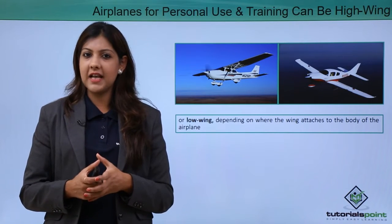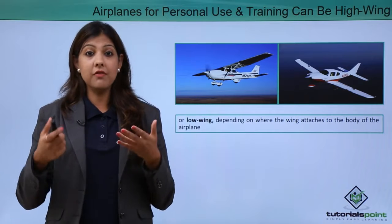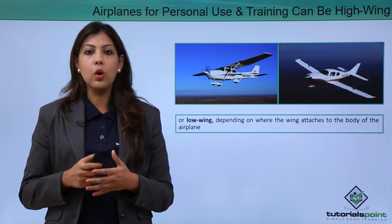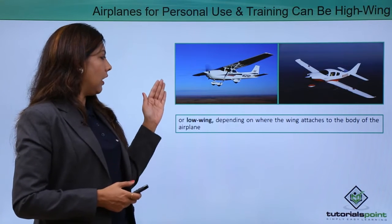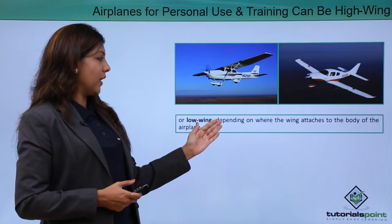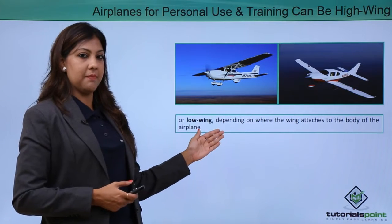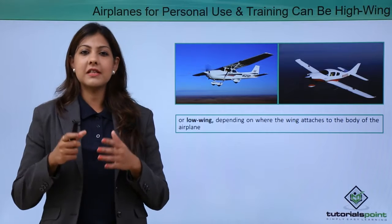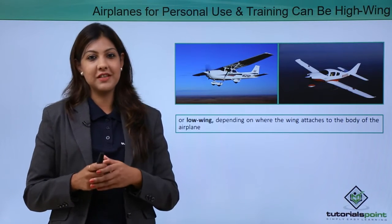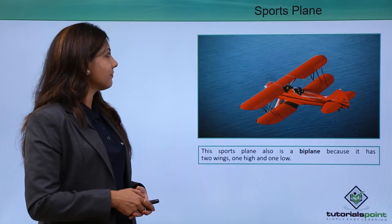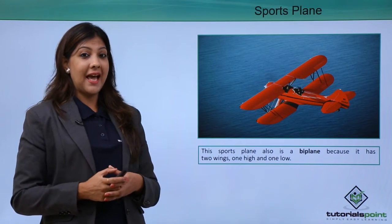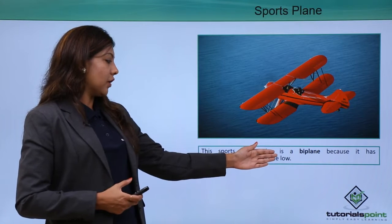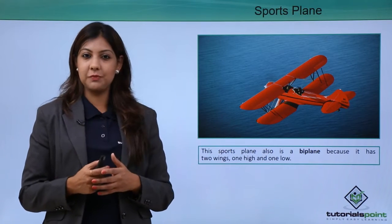Aircrafts can be high wing or low wing. A high wing aircraft has the wing attached towards the higher side of the fuselage, while a low wing aircraft has it attached towards the lower part. A sports plane can have both a high wing and a low wing — it is also known as a biplane because it has two wings, one positioned higher and one lower.